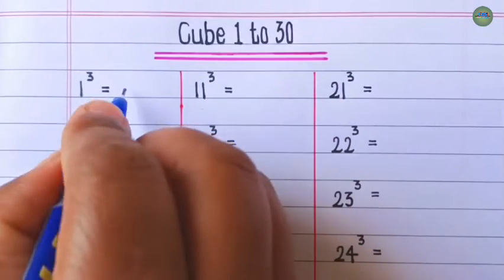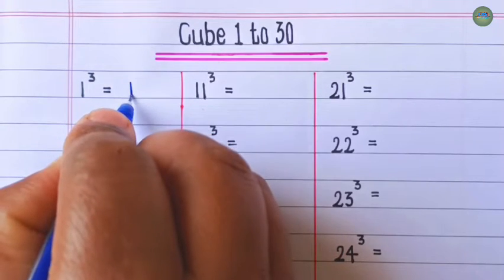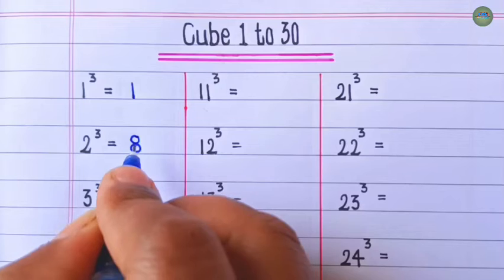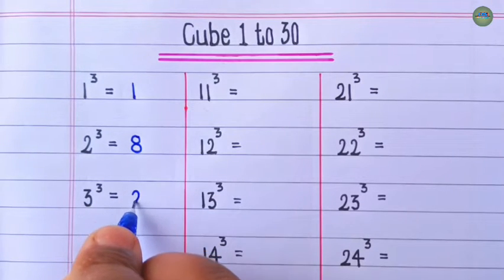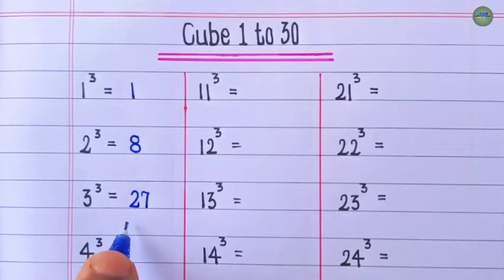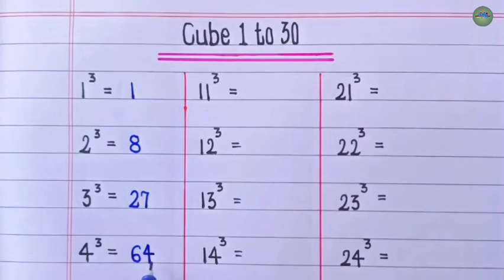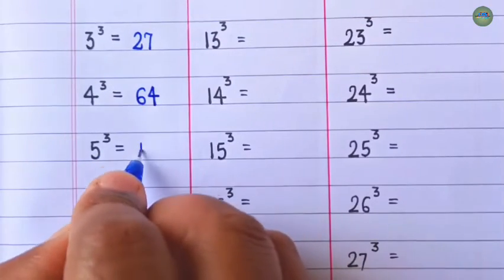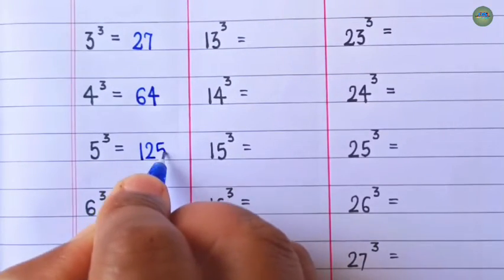Cube of 1 is 1. Cube of 2 is 8. Cube of 3 is 27. Cube of 4 is 64. Cube of 5 is 125.